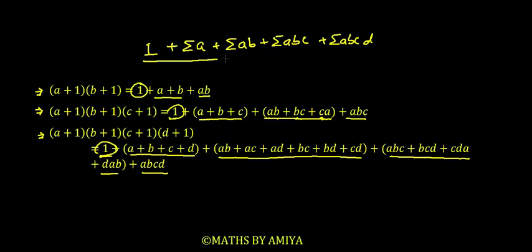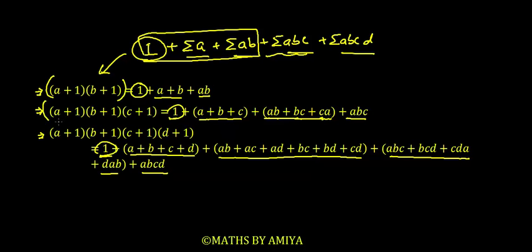If we are working for 1 plus sigma A plus sigma AB, the derivation is (A+1)(B+1). If working till sigma ABC: 1 plus sigma A plus sigma AB plus sigma ABC, then our derivation is (A+1)(B+1)(C+1), till ABCD that is (A+1)(B+1)(C+1)(D+1). So whenever we have sigma A, sigma AB, sigma ABC, or sigma ABCD terms, we just need to add 1 if it's missing and convert the whole series into the product of different variable terms. I hope it is clear.